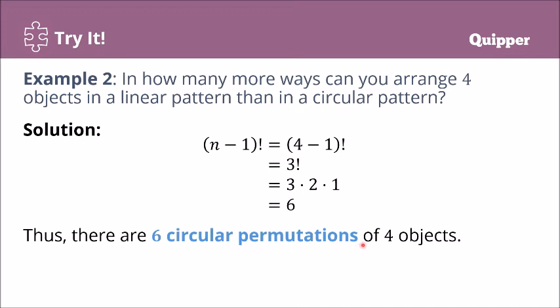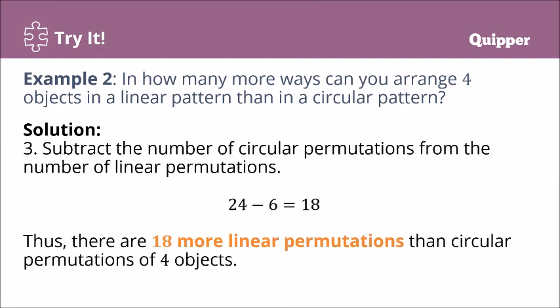So we have 24 linear permutations and 6 circular permutations — there are more linear permutations than circular permutations. To find how many more ways, we subtract: 24 - 6 = 18. Therefore, there are 18 more linear permutations than circular permutations of 4 objects.